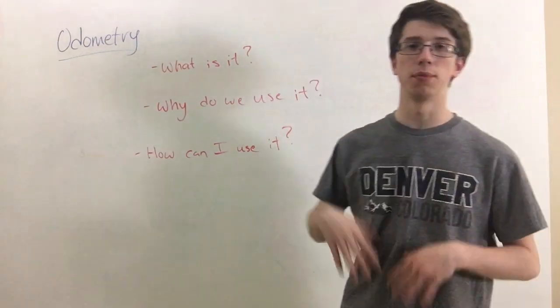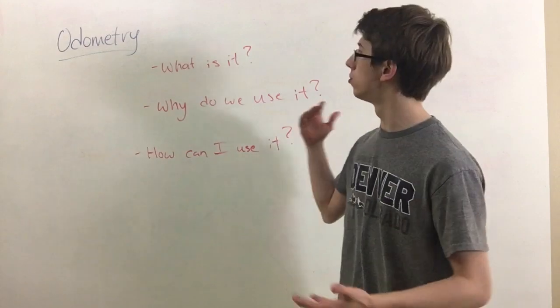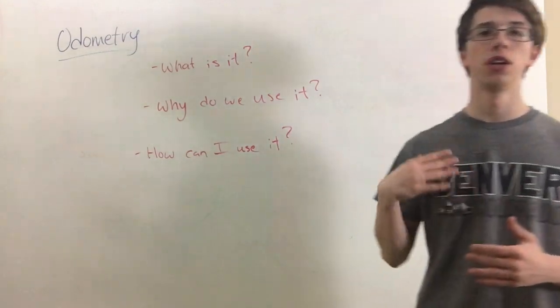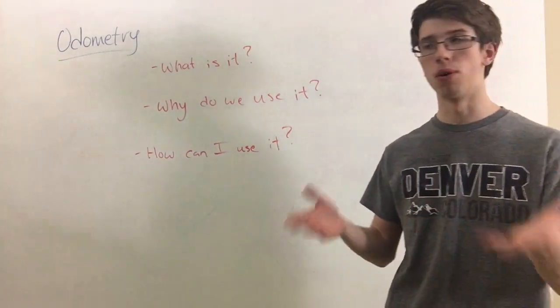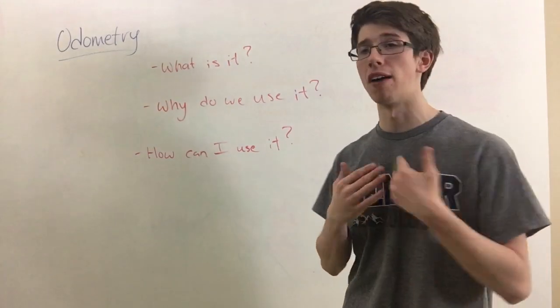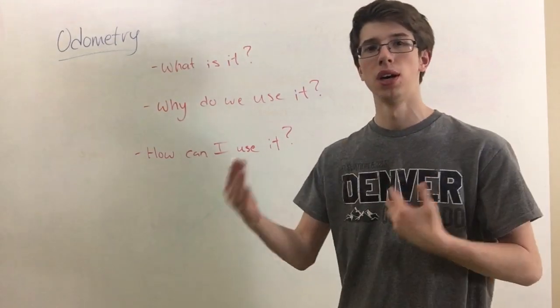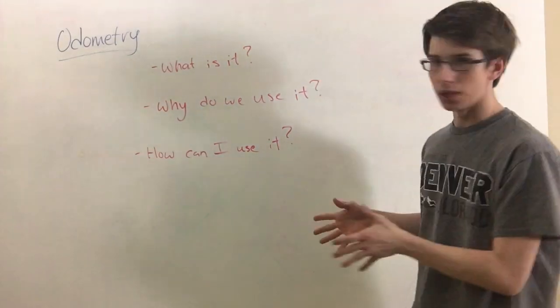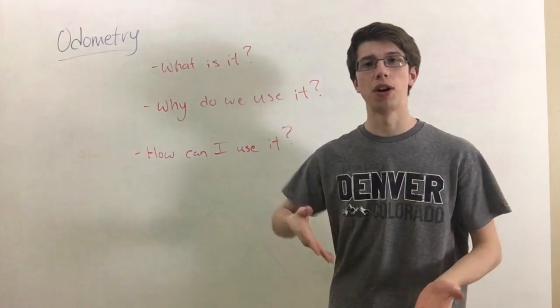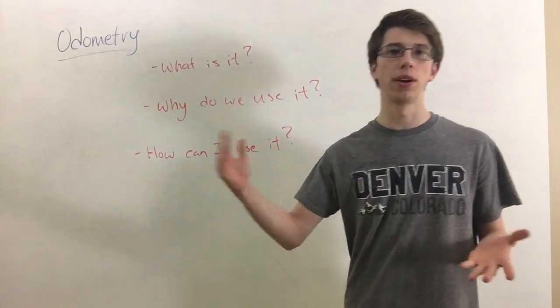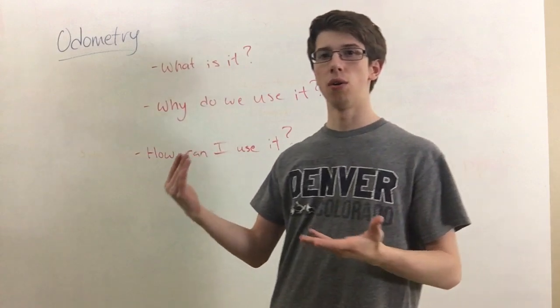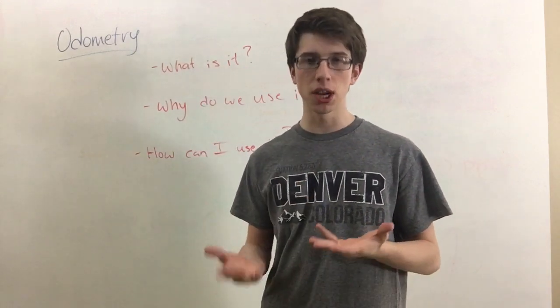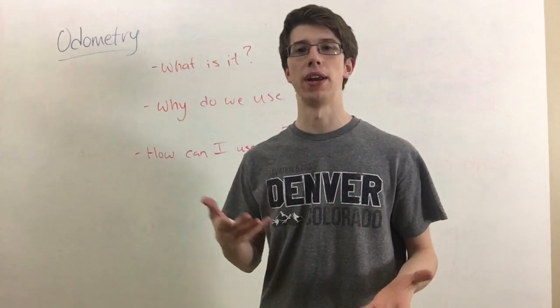The first one is what is it? Well, odometry is a way to determine and track the position of your robot on the field or just in a certain location or area, how far it's moved, the distance it's traveled, using data from either some sort of sensor or encoder readings or some other management system that you have created.